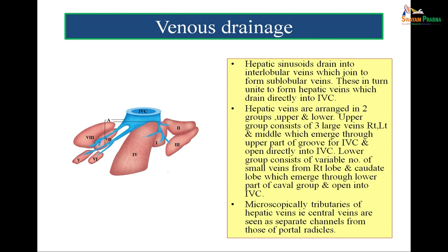For venous drainage of the liver, the hepatic sinusoids drain into interlobular veins which join to form sublobular veins. These in turn unite to form hepatic veins which directly open into the inferior vena cava. The hepatic veins are arranged in two groups — upper and lower. The upper group consists of three large veins: right, left and middle, which emerge through the upper part of the groove for inferior vena cava and open directly into the inferior vena cava. The lower group consists of a variable number of small veins from the right lobe and caudate lobe, which emerge through the lower part and open into the inferior vena cava. Microscopically, tributaries of hepatic vein are seen as separate channels from those of portal radicals.